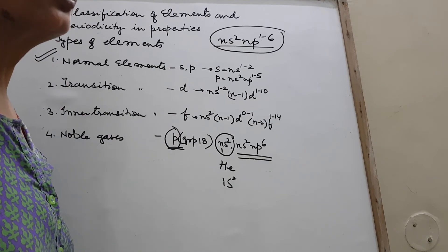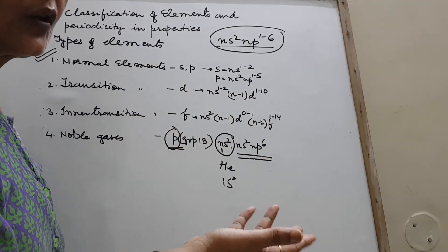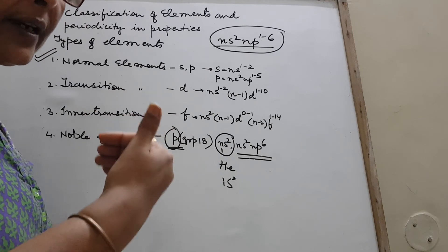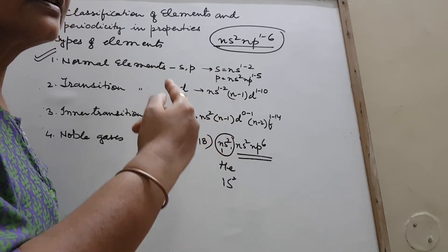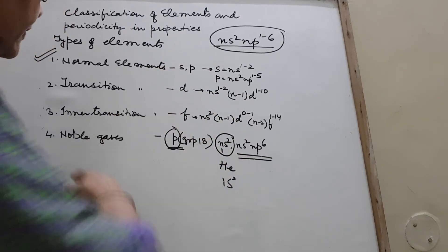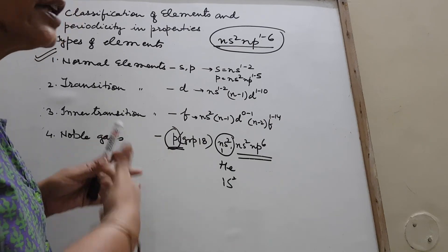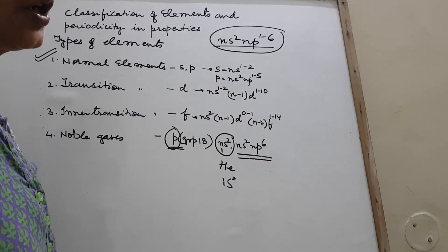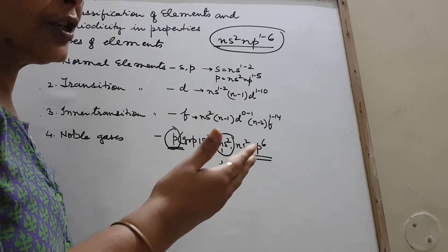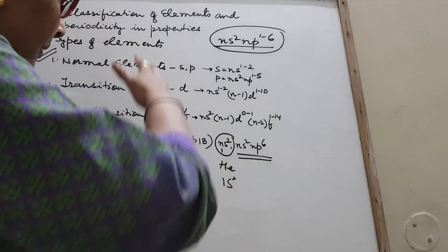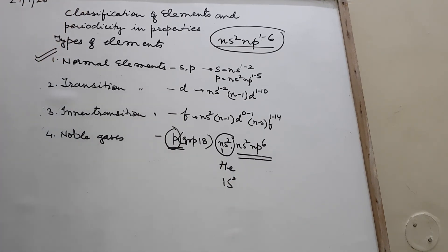So the trends hold good for normal elements, which belong to groups 1A and 2A — or in modern notation, groups 1 and 2 — and then groups 3A through 7A, i.e., groups 13, 14, 15, 16, and 17. We also discuss group 18 along with them while discussing these trends. So I stop here. Hope this point is clear to you.